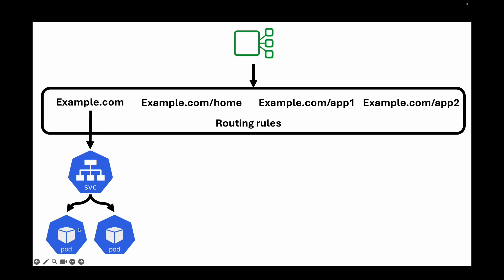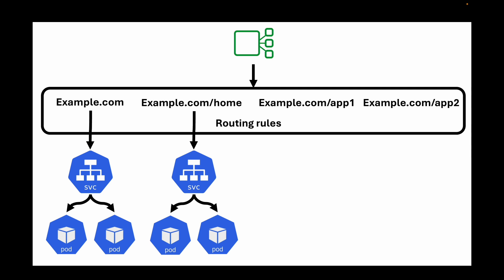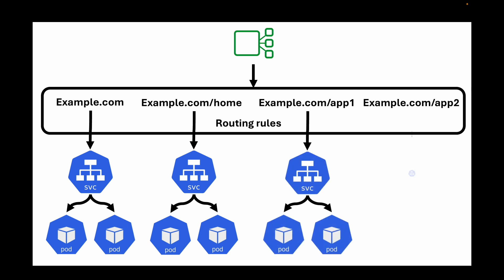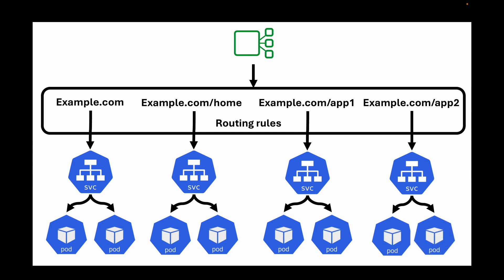For example, if I have example.com, example.com/home, example.com/app1, and example.com/app2, hitting example.com should go to one set of pods, while hitting example.com/home should go to another set of pods. With ingress we define routing rules, and when a user hits a URL, the ingress evaluates those rules and forwards the request to the respective service, which in turn forwards it to the respective pods. This applies to all routes defined in the ingress controller.